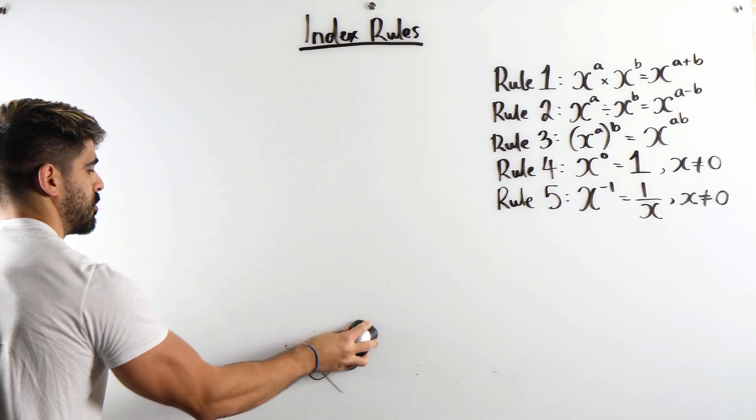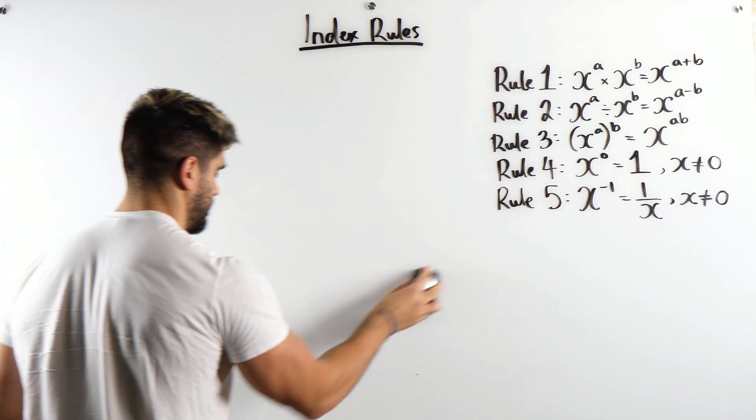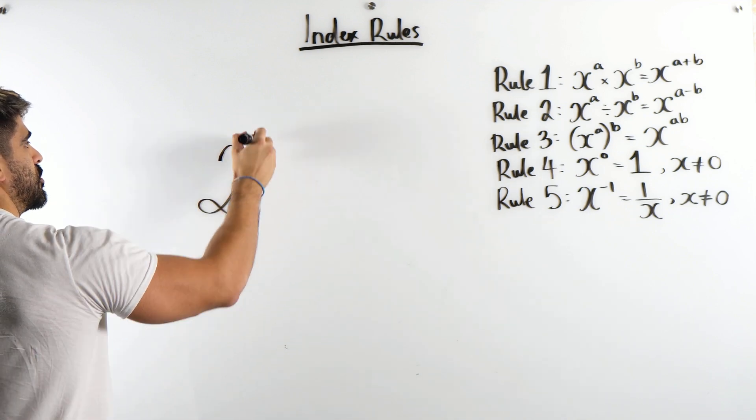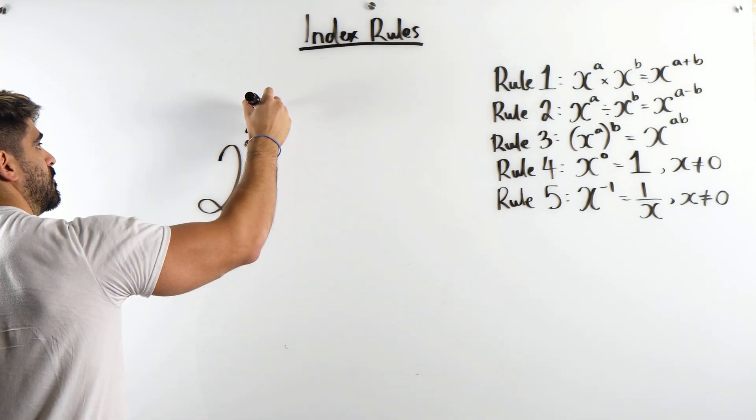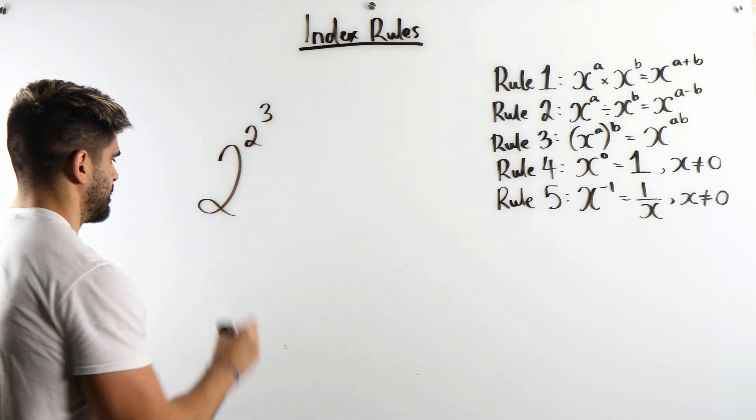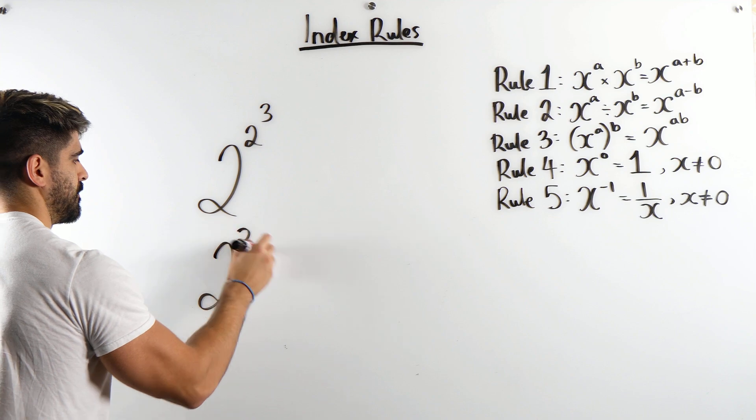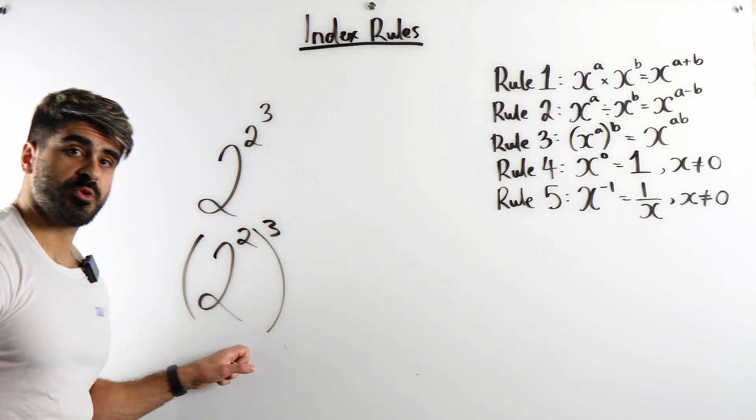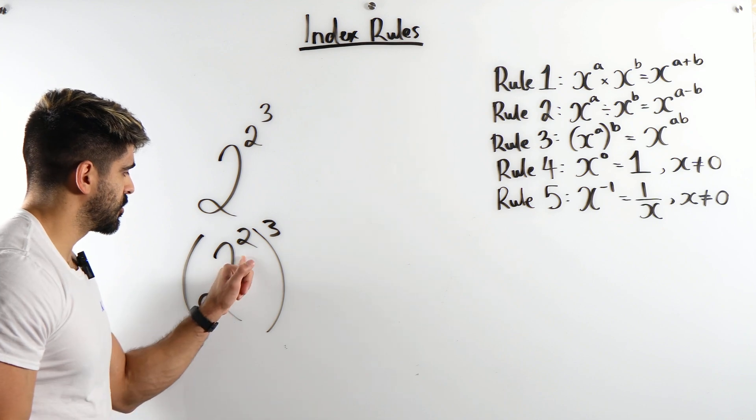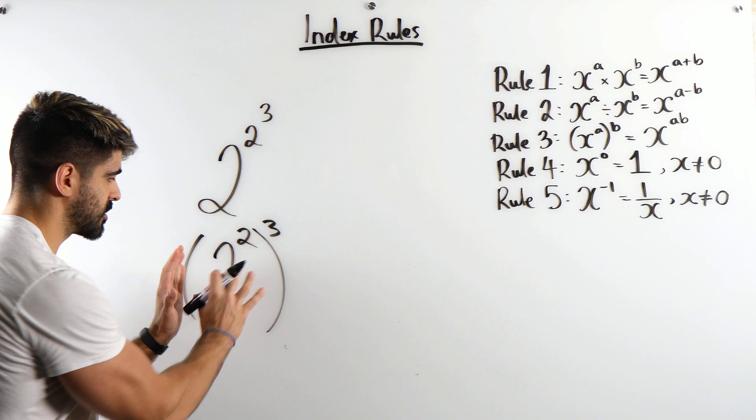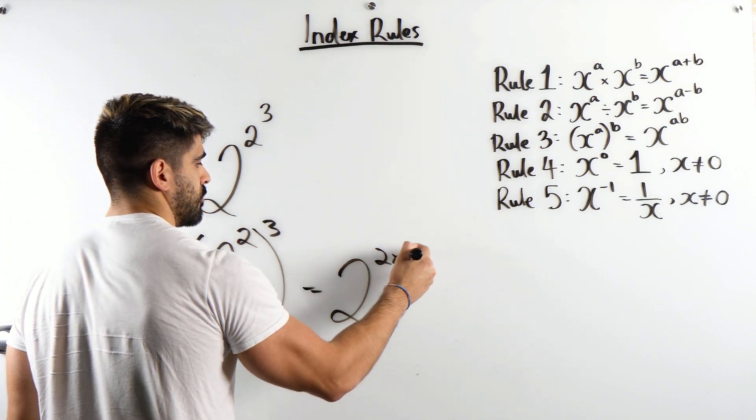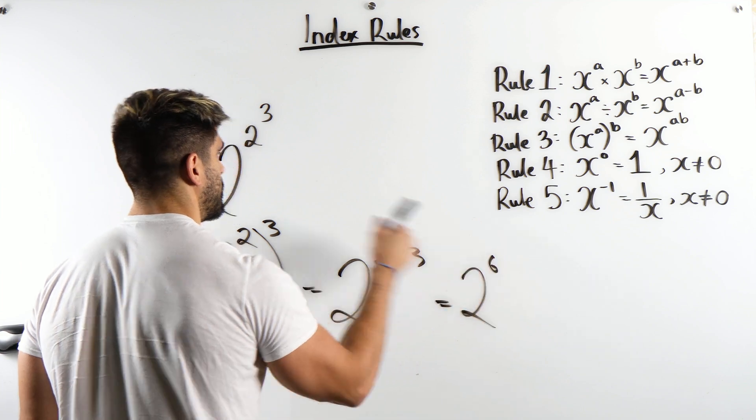So for example, if I do the exact same question but without the bracket, for example, I had 2 to the power of 2 then I had a bracket cubed, right? Imagine I have it like this. Let's quickly take a look at the difference here. This one which we just looked at is saying look, you're taking the number 2, you're squaring it, then this whole thing we're going to cube it. This is rule 3.